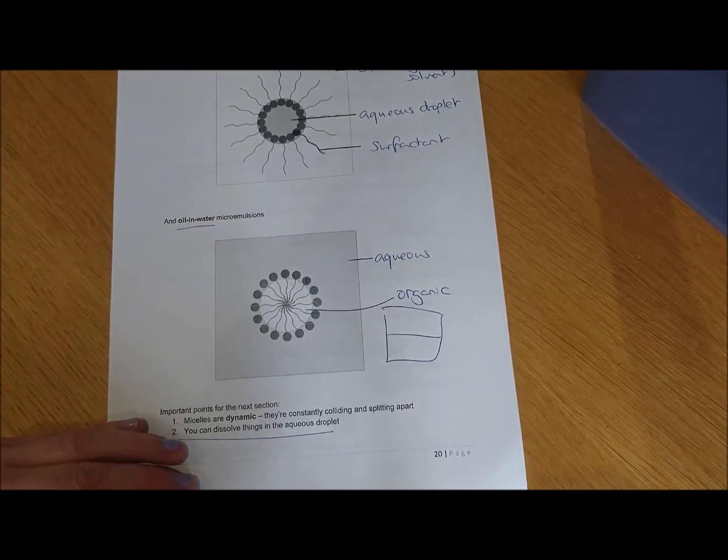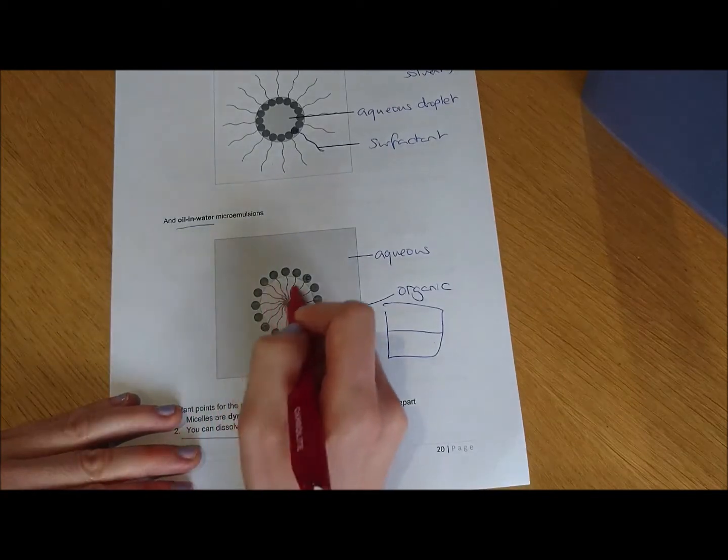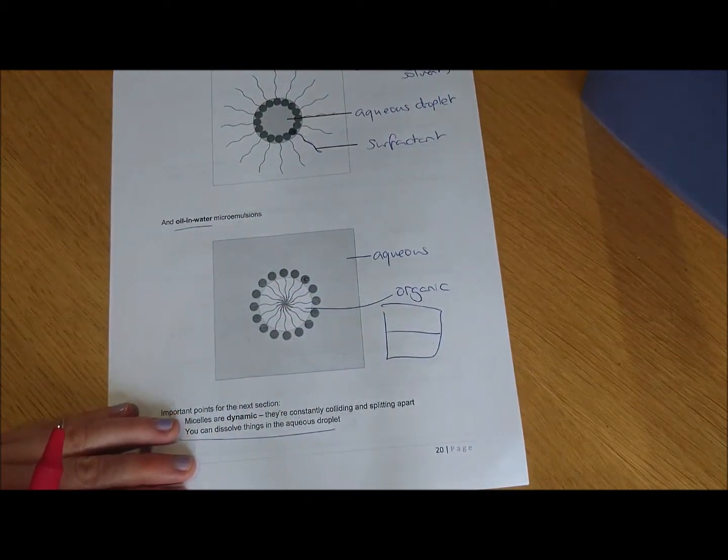You can get oil in water microemulsions. That's where you've got your oil droplets, your organic solvent droplets, dispersed within an aqueous continuous phase, so dispersed in water.